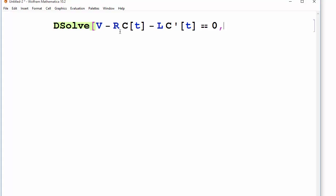So that's our equation. We want to solve for the current as a function of time. And the variable that everything is depending on is time. Okay, and what do we get?